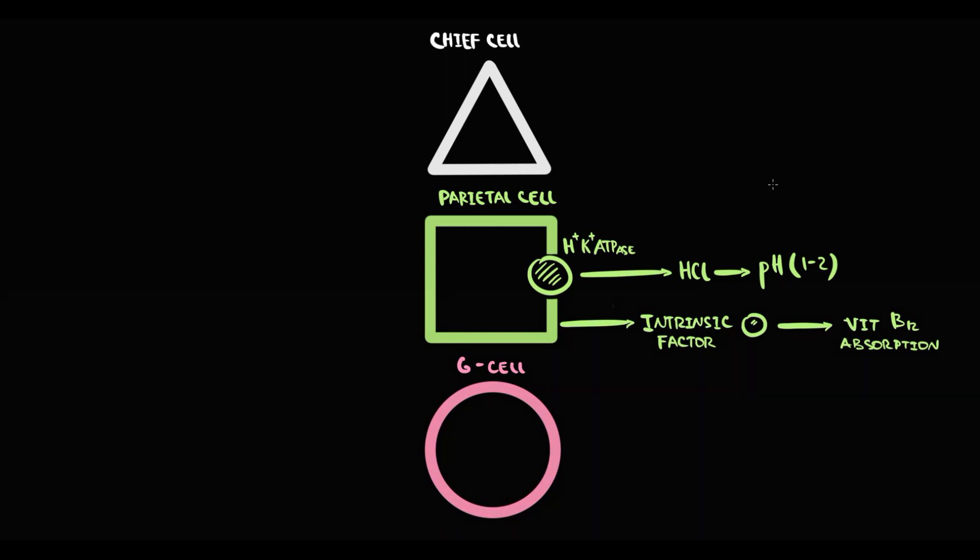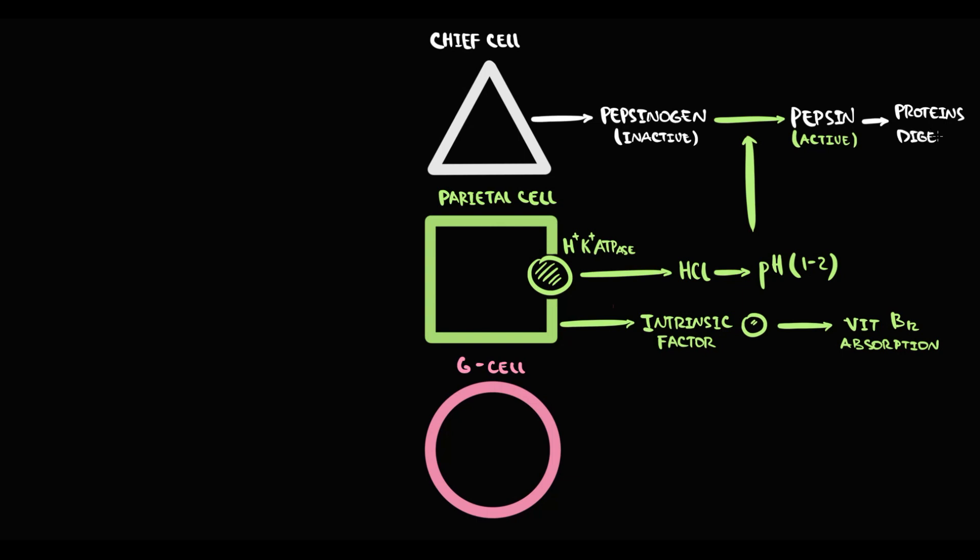The function of chief cells is to produce pepsinogen, but pepsinogen is an inactive enzyme. In order to be activated, acidic pH cleaves a part of pepsinogen, thereby creating pepsin. The function of pepsin is protein digestion.